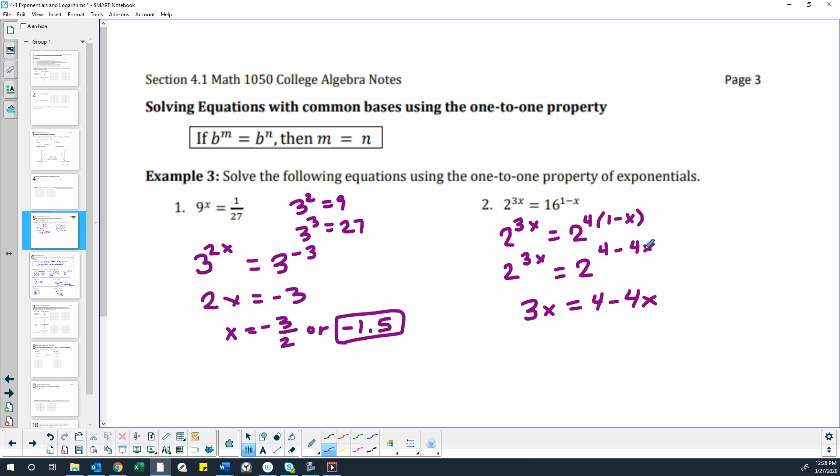So this is no longer the same equation, but it's going to have the same solution that this equation has. So we want our x's on one side. We're going to add the 4x to both sides, so 3x plus 4x is 7x, leaving 4 by itself on the right. So we just divide both sides by 7, and our answer is 4/7.